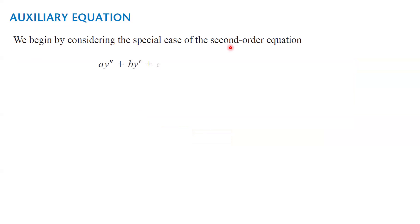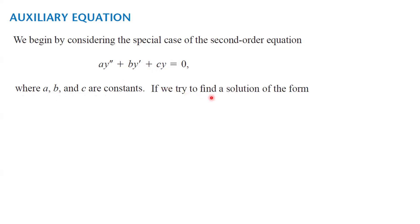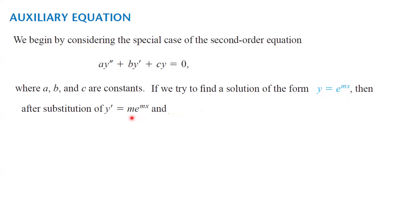In the topic of auxiliary equations, we begin by considering a special case of a second-order equation: ay'' + by' + cy = 0, where a, b, c are constants — not functions of x or t. If we try a solution of the form y = e^(mx), then y' = me^(mx) and y'' = m²e^(mx).